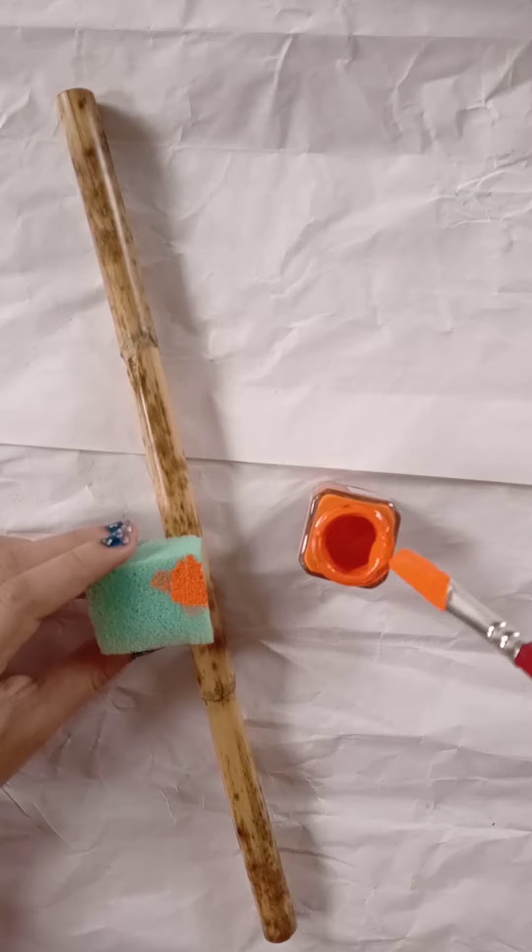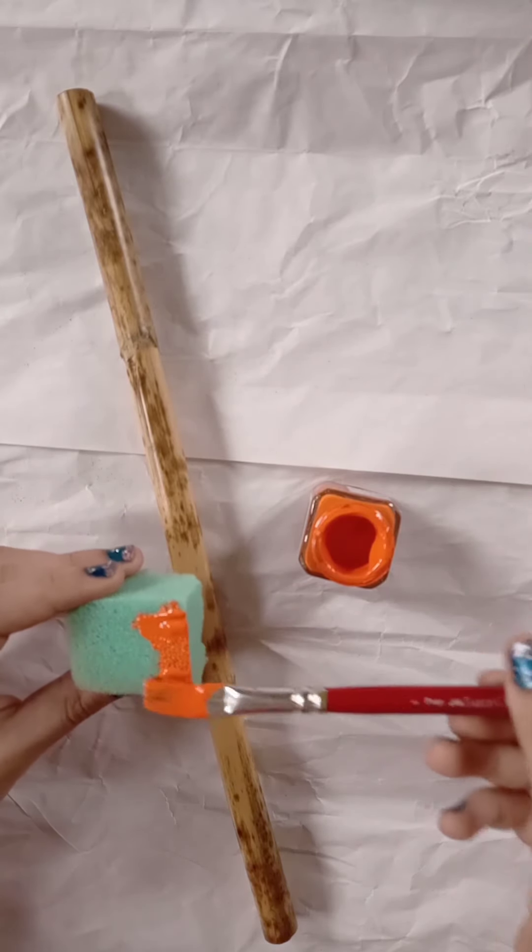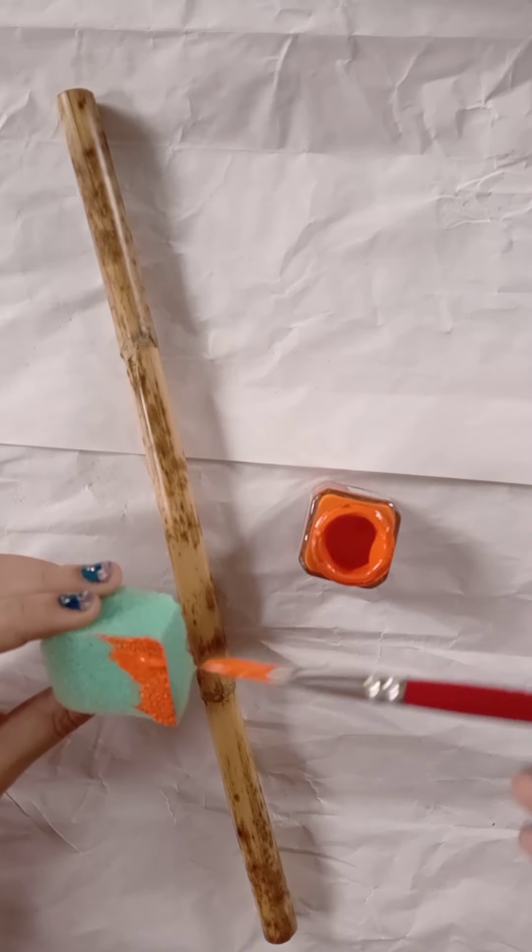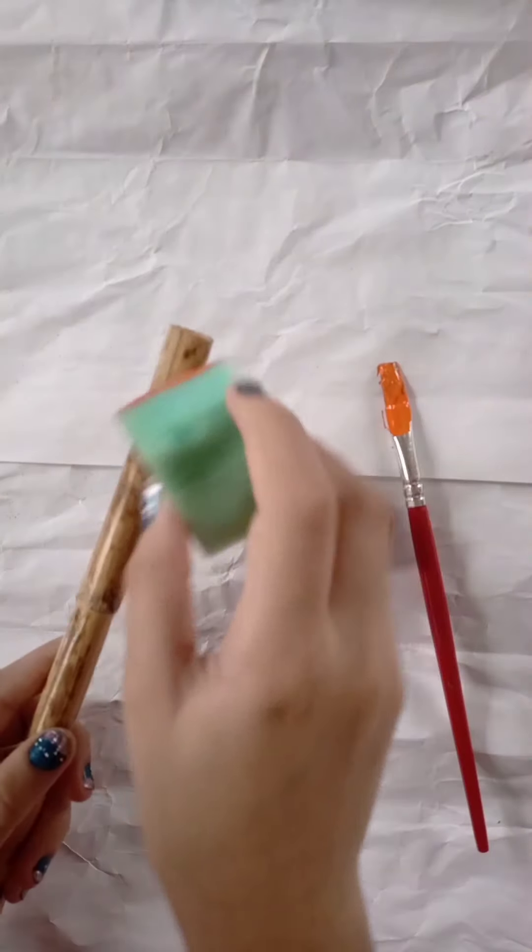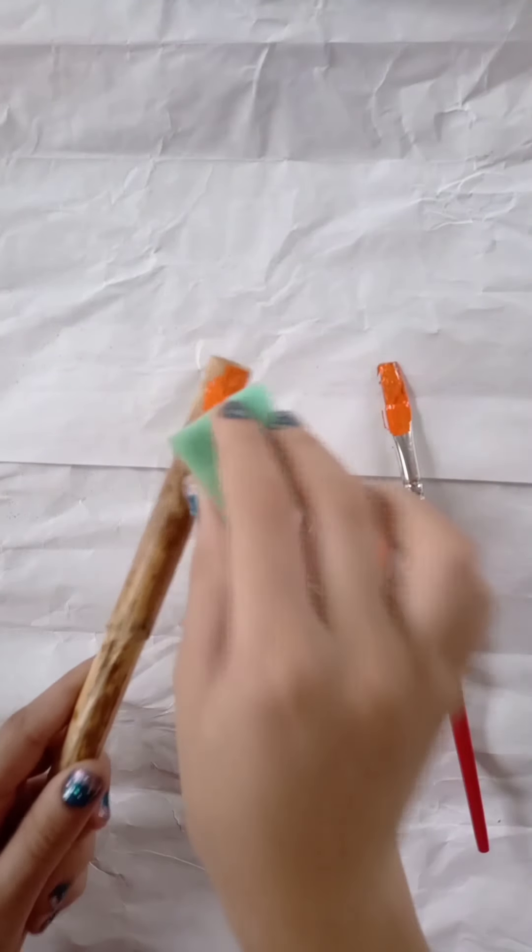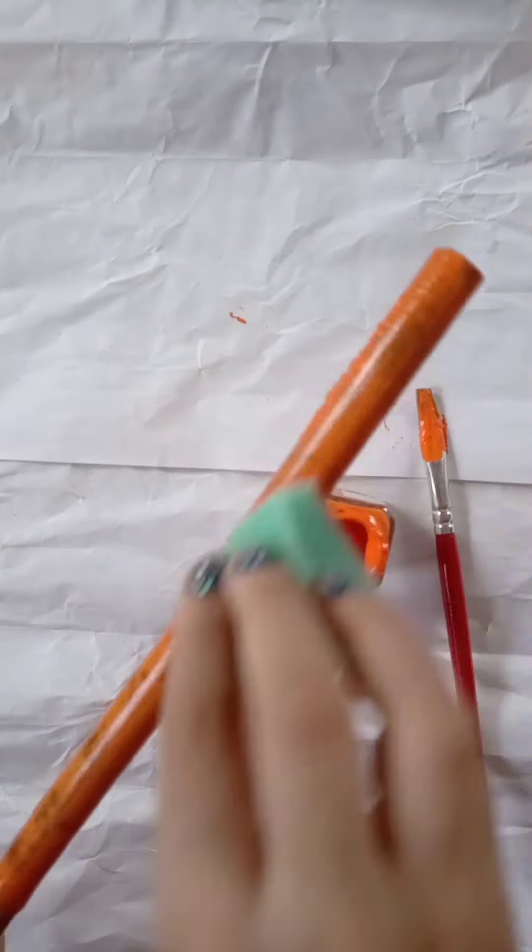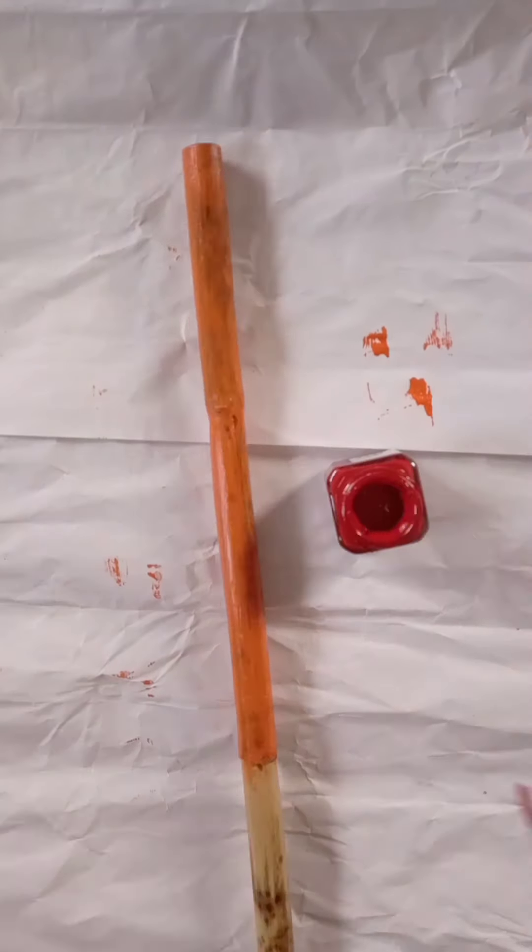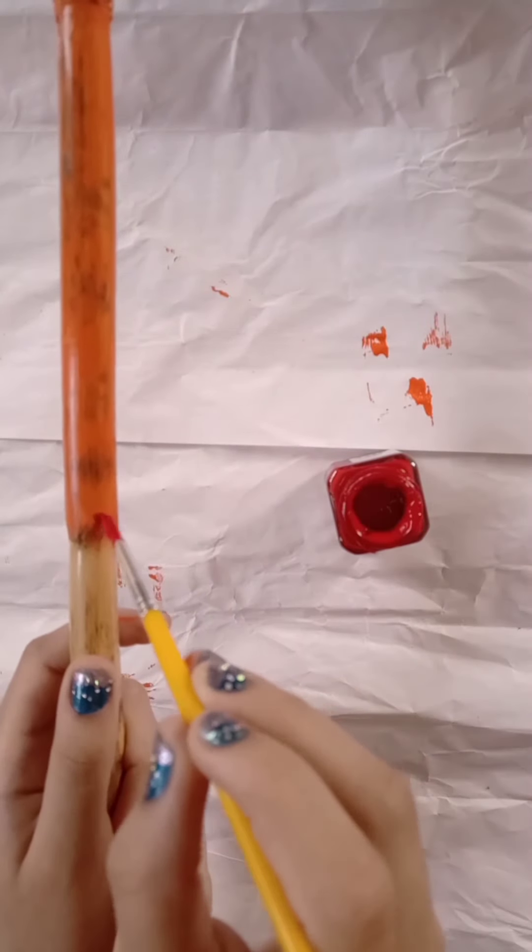First, we need to take paint on the sponge and dab it onto the stick. Make some simple designs with the paint.